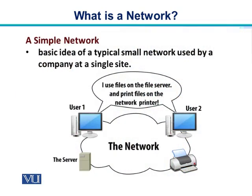This is a diagram of a very simple network being used by a company at a single site. In this diagram we can see there are a couple of users — User 1 and User 2 — and they are connected over this cloud to the server, and they can also enjoy the printing facility. User 1 and User 2 can access files on the file server and print files on the network printer.